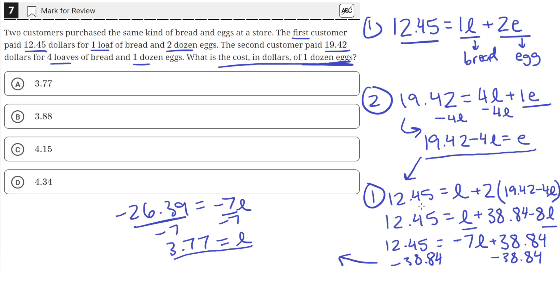But now that we know the value of L, we can plug that into this equation we got, where we can write the price of eggs in terms of L. So, 19.42 minus 4 times 3.77 equals E, the price of a dozen eggs.